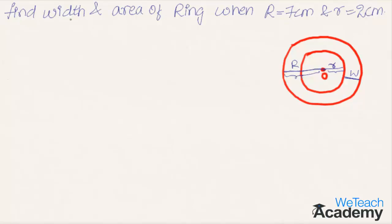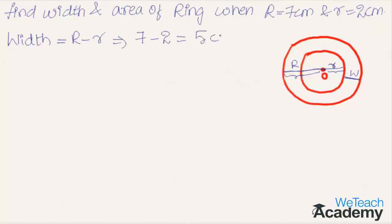We already know that the width of a ring is given by the formula capital R minus small r. Substituting the values, we get 7 minus 2, which equals 5 cm as the width.